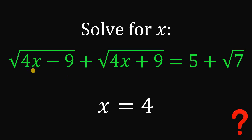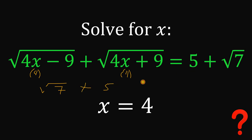Let's verify our answer by substituting x equals 4. We get 4 times 4 equals 16, minus 9 gives square root of 7. And 4 times 4 equals 16, plus 9 is 25, and square root of 25 is 5. So square root of 7 plus 5 equals 5 plus square root of 7, which checks out. Therefore, the real value of x that satisfies this equation is 4. And as always, we are done.